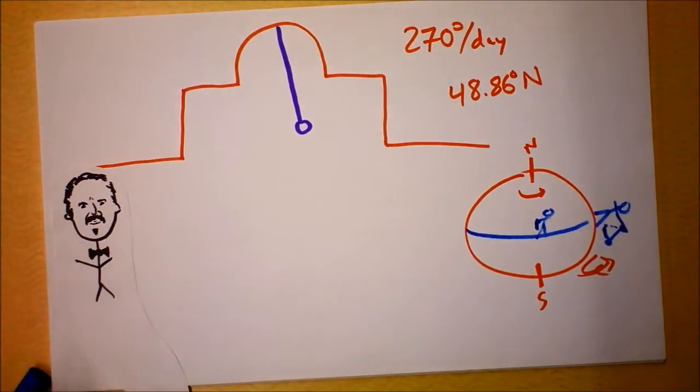This guy's going to see always the same. So like you never find Foucault pendulums in Ecuador, for instance, or Equatorial Guinea, because they don't work there.